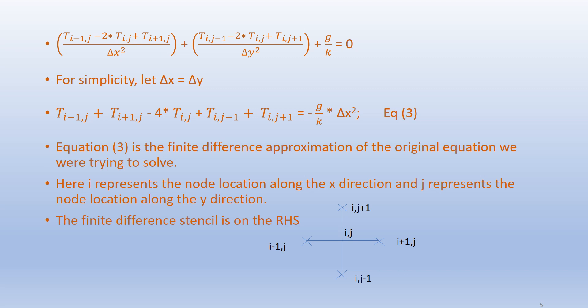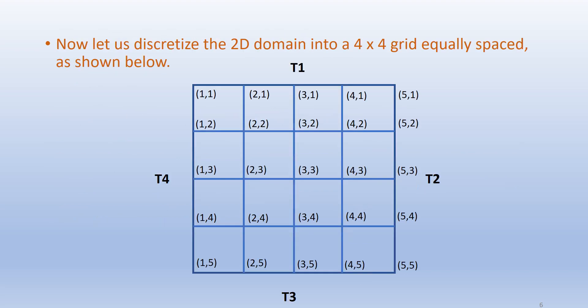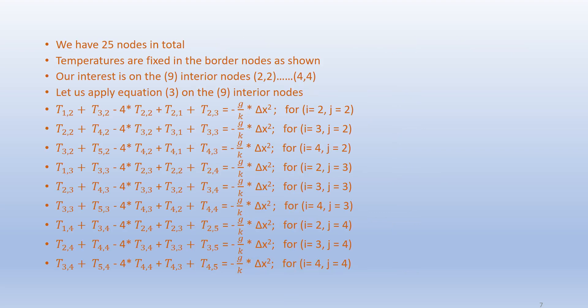The finite difference stencil is shown on the right hand side. We now discretize the 2D domain into a 4 by 4 grid, equally spaced, giving 25 nodes in total. Temperatures are fixed at the border nodes. Our interest is on the 9 interior nodes from (2,2) to (4,4). We apply equation 3 on these 9 interior nodes.